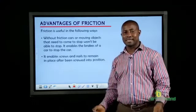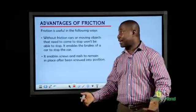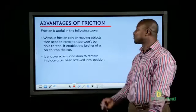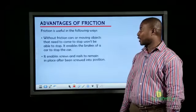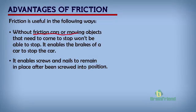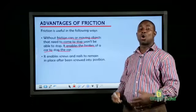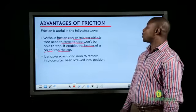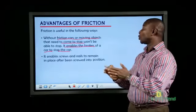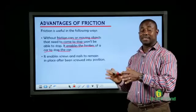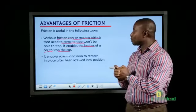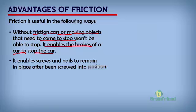Let's look at the advantages of friction. Number one: without friction, cars or moving objects will not be able to come to a stop. An example is the use of brakes in our cars — friction is what enables our cars to come to a stop by the application of the brake. The brake makes contact with the tire and is able to make the tire bring the car to a stop.